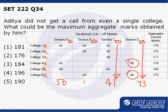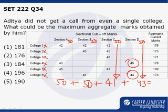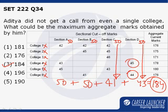Hence, if I have sectional scores of 50, 50, 41, and 43, which gives me a total of 184, I would get rejected by all the colleges and still have the maximum possible score. Hence, the correct answer is option 3.